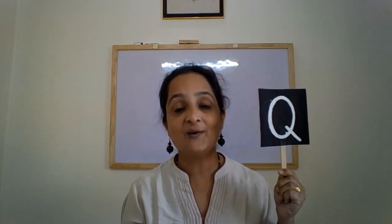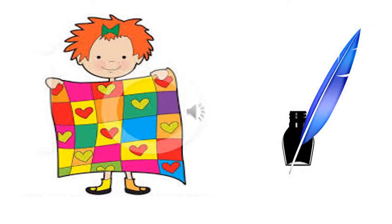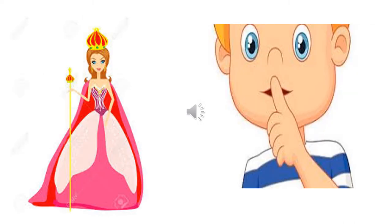Now let us see a few pictures of all those words which start with the sound 'kuwa.' Q for quilt — children, you cover yourself with a quilt. Q for queen. Q for quiet. Q for question mark — you ask questions, don't you? But if you have to write them, you put a question mark. Children, remember, letter Q and Q makes the sound 'kuwa.'